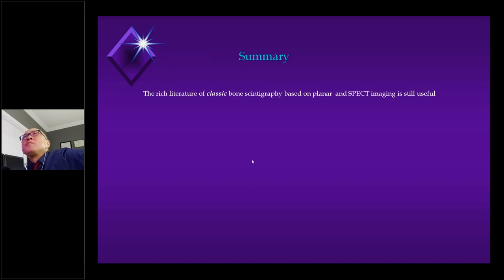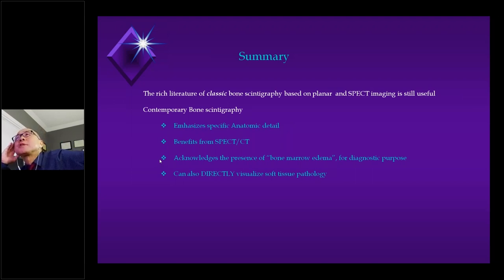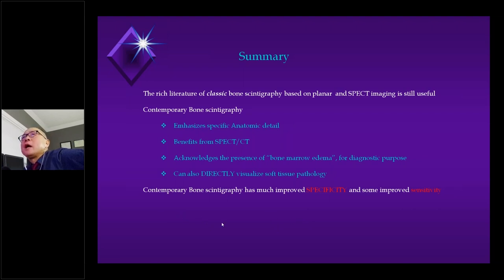In summary, the rich literature we have from classic bone scintigraphy is all legitimate — residents have to learn the patterns, and even SPECT alone is very useful. But in modern times with contemporary bone scintigraphy, if we emphasize anatomy, maximize what we can from SPECT-CT, borrow the concept of bone marrow edema from musculoskeletal imaging, and accept that occasionally you can directly see or infer soft tissue pathology with our bone tracer, then the modern bone scan has a lot to offer. It is far more specific, with much improved sensitivity — far more diagnostically powerful than you may think. Thank you.